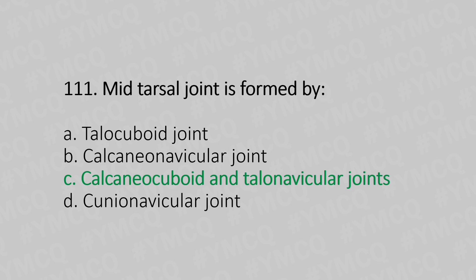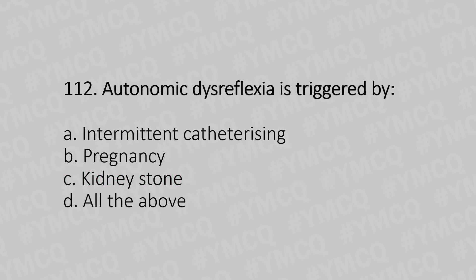Now let's move to question number 112. Autonomic dysreflexia is triggered by: Option A, intermittent catheterization. Option B, pregnancy. Option C, kidney stone. Option D, all of the above. And the answer is Option D, all of the above.